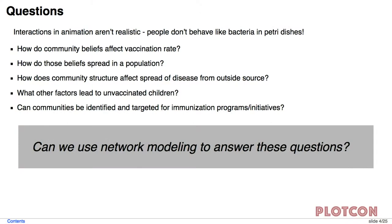But these little petri dishes don't exactly describe human interaction, right? We know that people have specific behaviors and beliefs that might influence them to choose whether or not to get their children vaccinated, whether that's a religious belief, or maybe they just don't have the access to that. So we have more questions about vaccination that maybe this animation doesn't answer. Things like, how do these beliefs spread within a population? How does that affect the vaccination rate? How can we target vaccination programs to specific communities? And my question is, can we use network modeling to answer these specific questions? And so this is where I say, wow, that would be great, but I don't have any data.